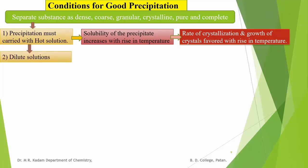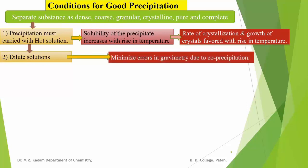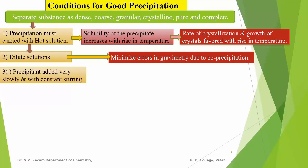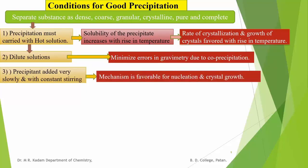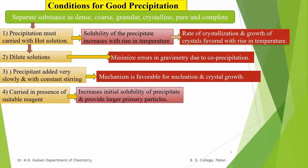The second condition is that we must use dilute solutions for precipitation. This minimizes error in gravimetry due to co-precipitation because surface adsorption decreases. The third condition is that the precipitant must be added very slowly and with constant stirring. This mechanism is favorable for nucleation and crystal growth. The fourth condition is that precipitation must be carried out in the presence of a suitable reagent which increases the initial solubility of the precipitate and provides larger primary particles.